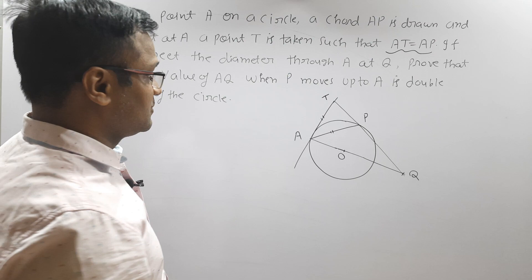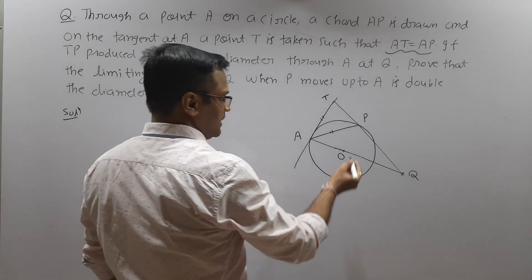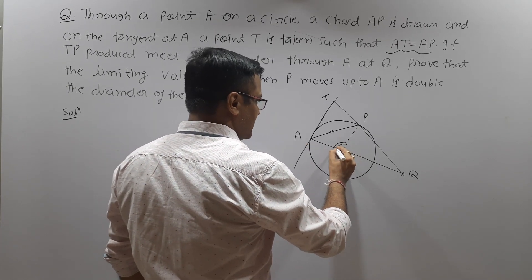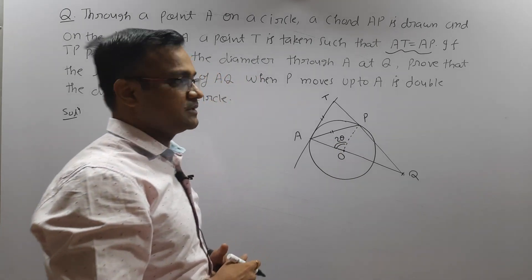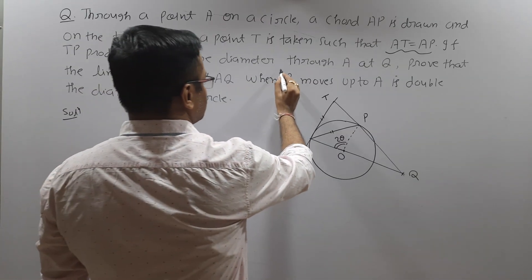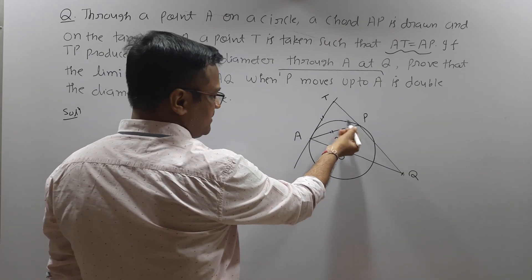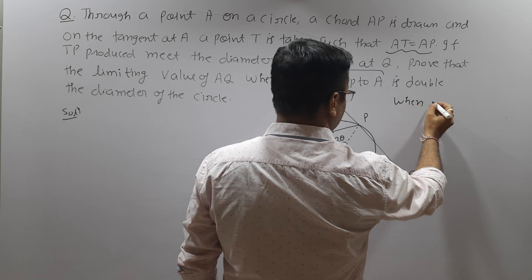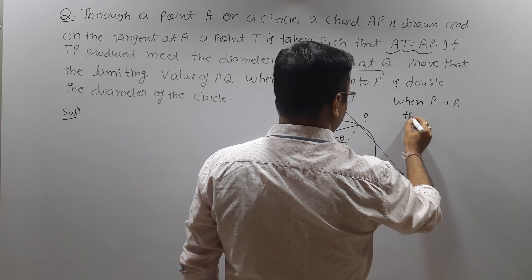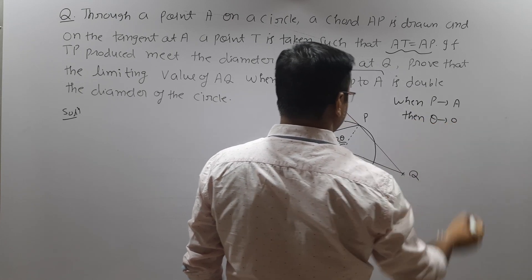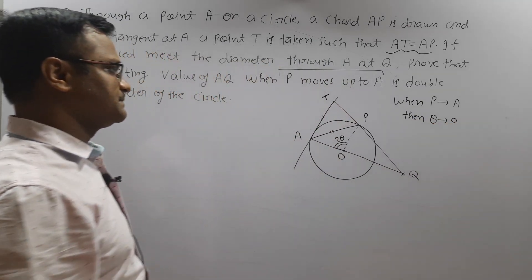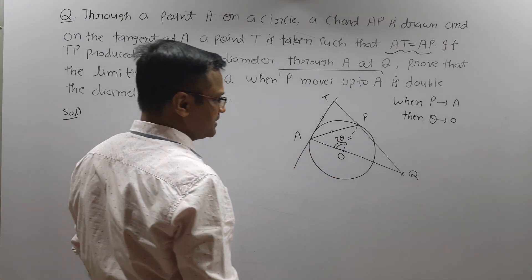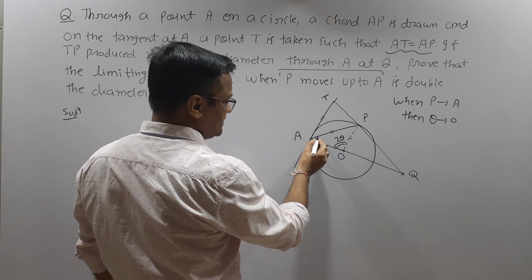So first of all, connect P and O, and suppose chord AP subtends angle 2θ at the center of the circle. Now, when P moves up to A, obviously this angle θ becomes 0 — that is, θ is tending towards 0. OA and OP are of equal length because they are both radii of the circle. If the central angle is 2θ, then each base angle of the isoceles triangle OAP becomes 90 minus θ.